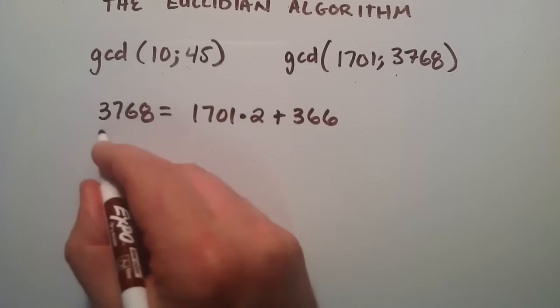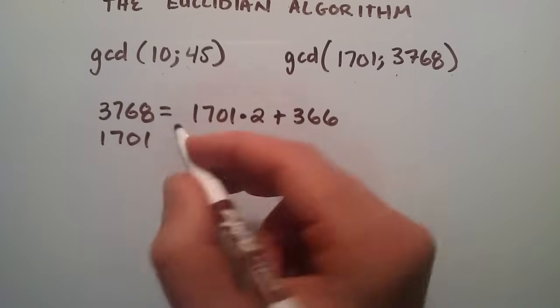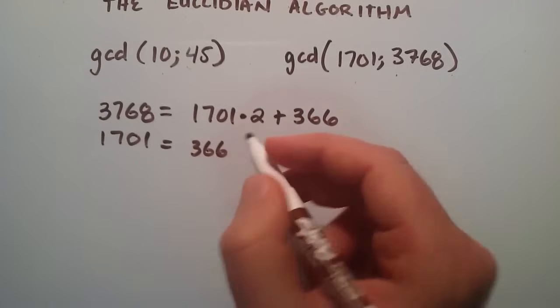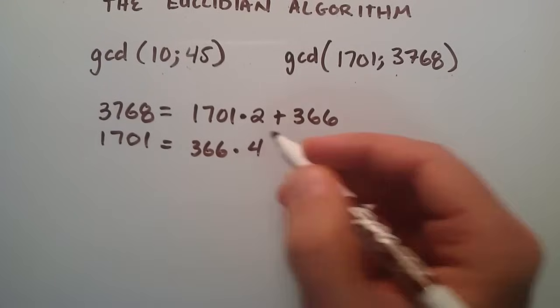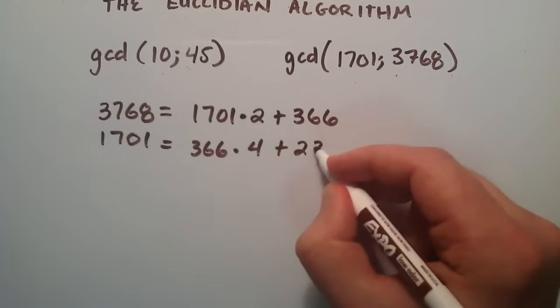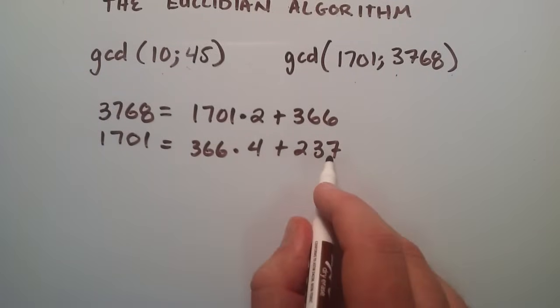Now moving this to the left hand side here. 1701 is equal to 366, moving that over, times 4, and that's plus 237. So 366 goes into 1701 four times, with a remainder of 237.